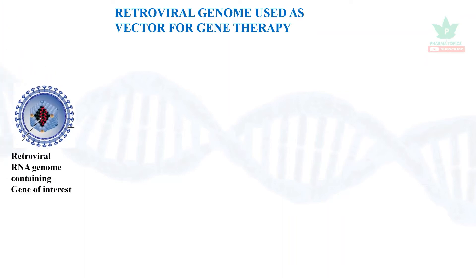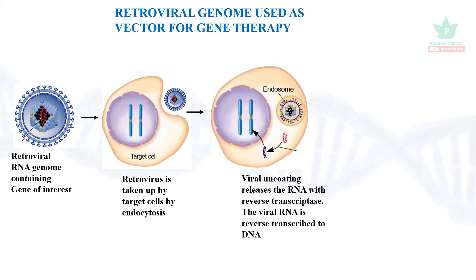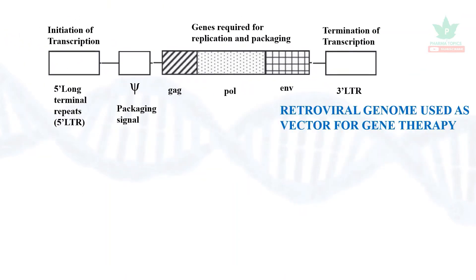Let us see how retroviral gene therapy works. A retrovirus RNA genome containing the gene of interest is added to the target cells by endocytosis — the retrovirus enters the cells and viral uncoating happens. With the help of reverse transcriptase, the viral RNA is reverse transcribed to DNA, and the DNA attaches to the host DNA. This recombination incorporates the good gene into the target cells.